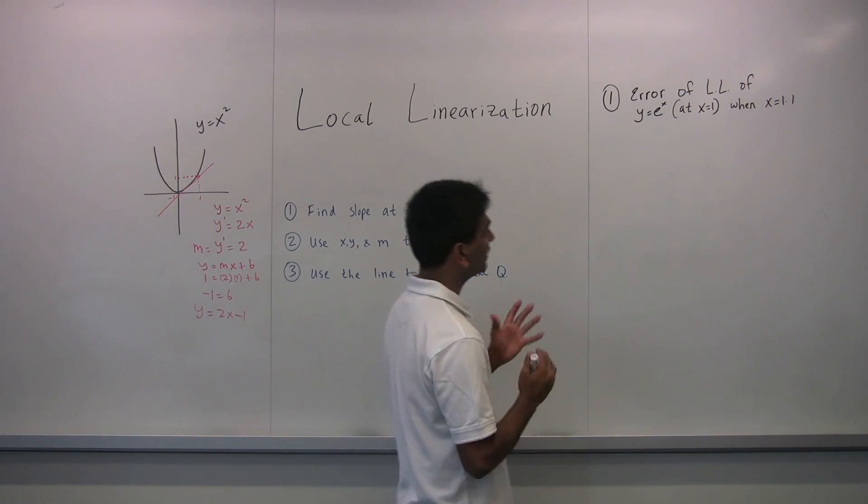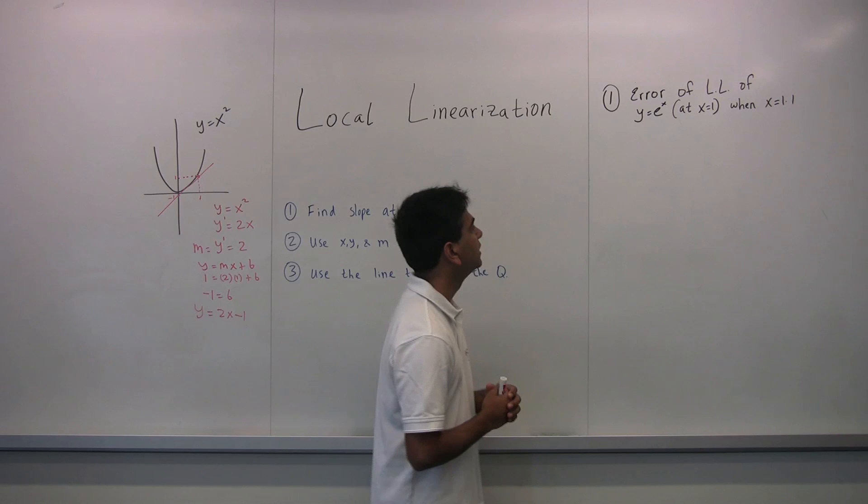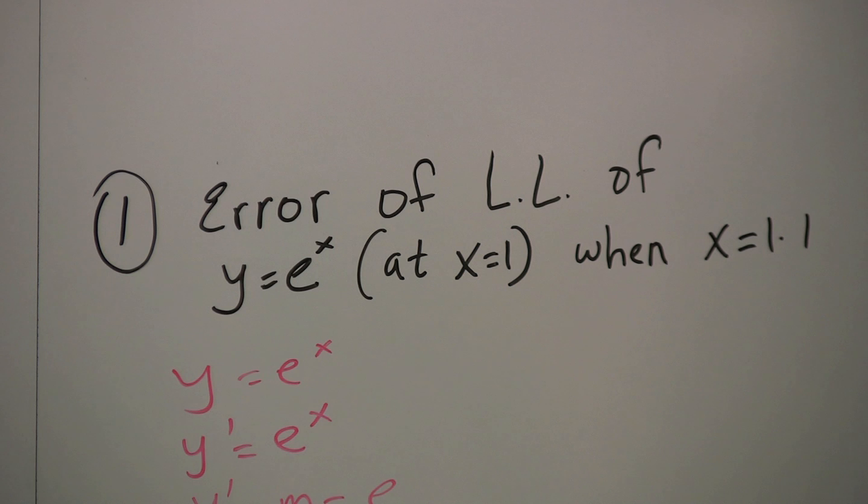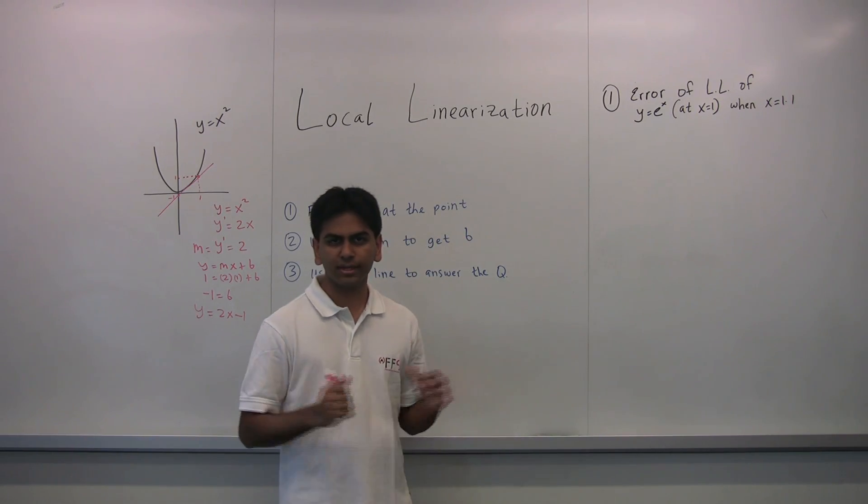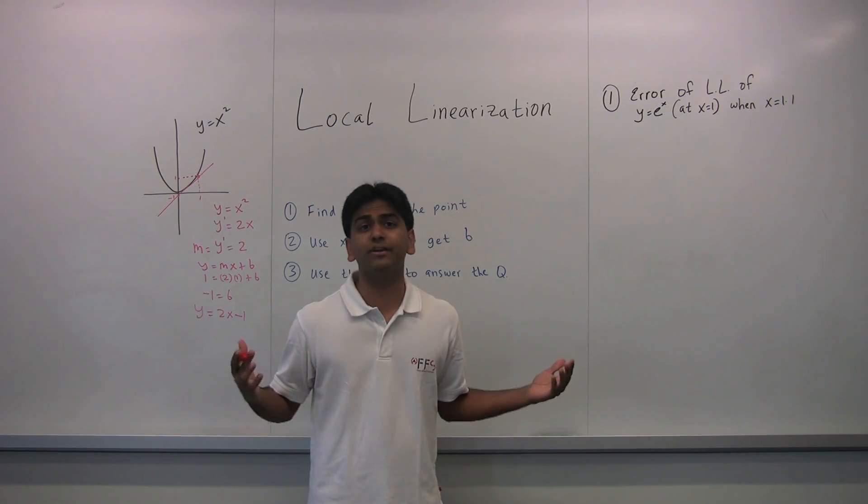So let's say we want to find the error of the local linearization of this function over here, y equals e to the x, at x equals 1 when x equals 1.1. What does this complicated, ugly question mean? Well, let's look at it step by step. First, let's find the local linearization.